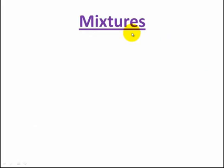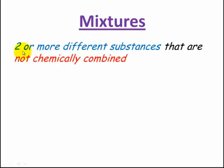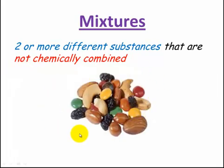Last but not least are mixtures. Mixtures are two or more different substances or chemicals that are not chemically combined. No chemical reaction has happened. A good example is trail mix - you've got your fruit and your nuts. These haven't been baked or reacted together; they're still their individual particles. They are a mixture and we can still separate them by physical means.